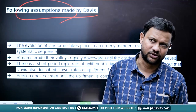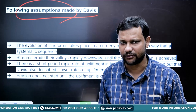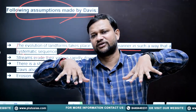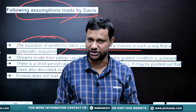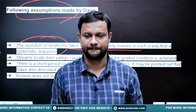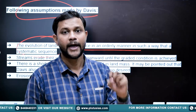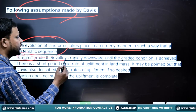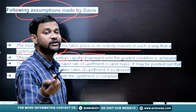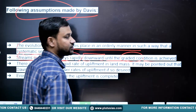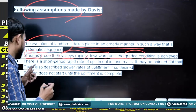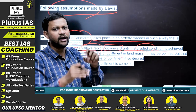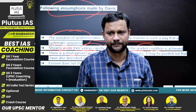Davis considered that the processes of upliftment of a landmass and its consequent degradation or denudation are two distinct processes that must be considered in isolation. So streams erode their valleys rapidly downward — known as downcutting or vertical erosion — until the graded or base level condition is reached. The initial period of upliftment is very short, which is why he does not consider it a separate stage.